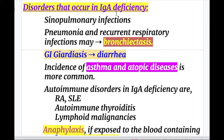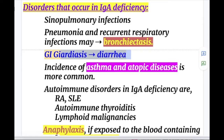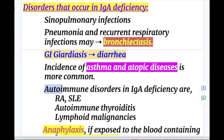Disorders that occur in IgA deficiency include sinopulmonary infections, pneumonia, and recurrent respiratory infections that may lead to bronchiectasis. In the GI tract, it may cause Giardiasis leading to diarrhea and malabsorption. The incidence of asthma and atopic diseases is more common in IgA deficiency. Autoimmune diseases associated with IgA deficiency include rheumatoid arthritis, SLE, autoimmune thyroiditis, and lymphoid malignancy.